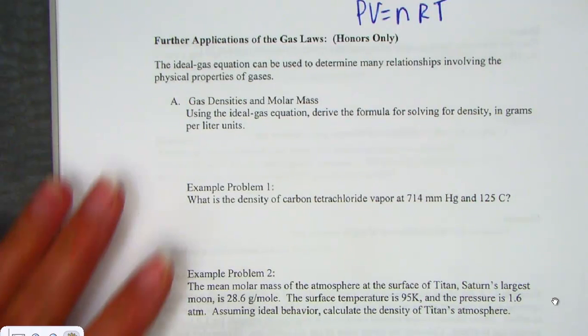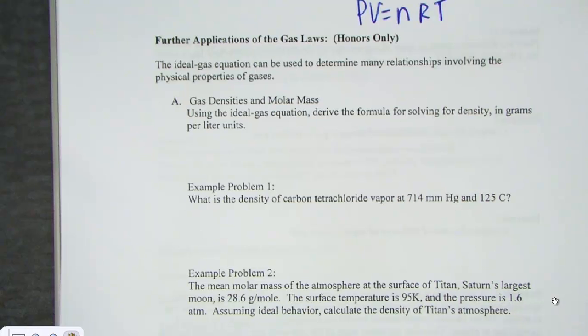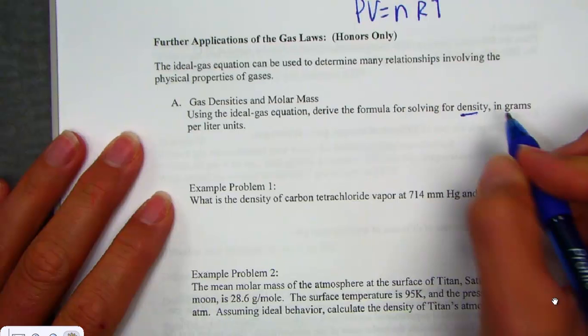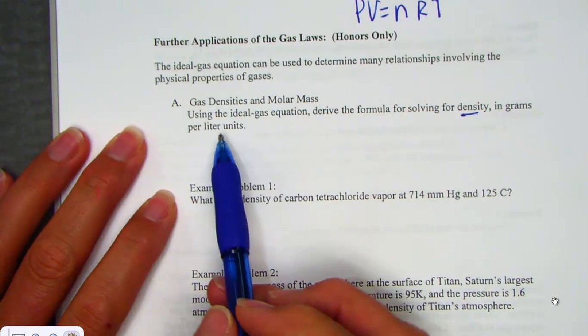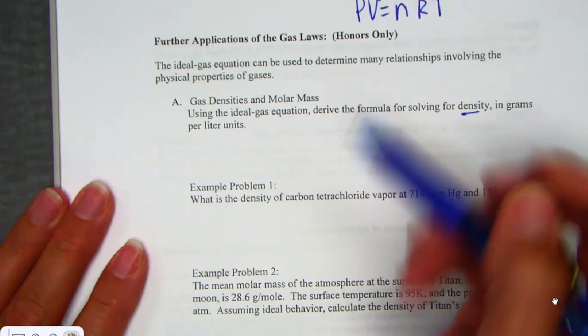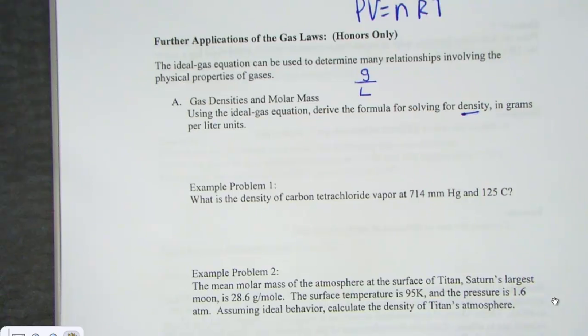Our ideal gas equation can be used to determine many relationships involving physical properties of gases, specifically things like mass, molar mass, and density, variables we find inside of a PV nRT equation. Let's solve for the first one here using the ideal gas equation. We want to think about gas densities. Density, of course, is a unit that comes to us in grams per liter, so we're trying to figure out where hidden inside the PV nRT is a density formula.